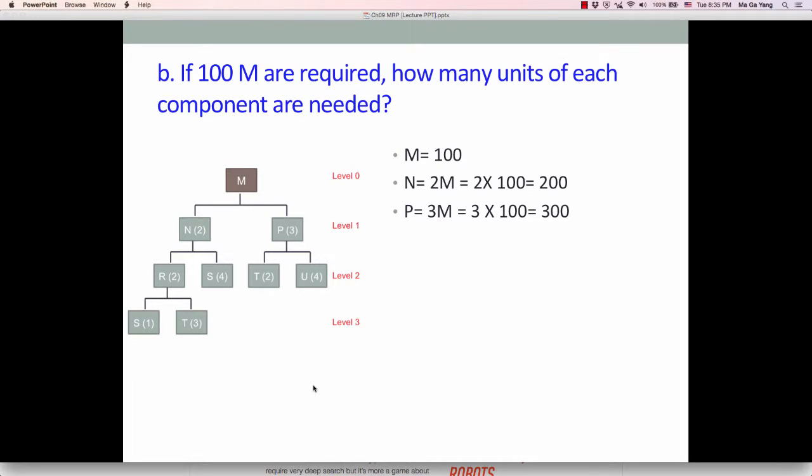And so on and so forth. So R is 2N, so 2 times 200 is 400. So 400R are required to produce N. Then we produce N. But some items, some parts are used more than once. Let's look at S and T. S are required to make N and to make R. T are required to make P and to make R.